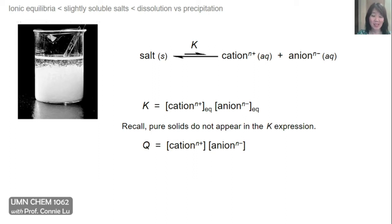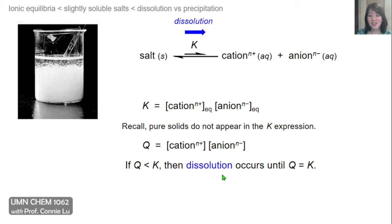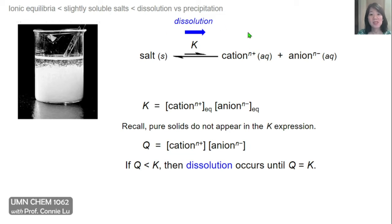We can also write an expression for the reaction quotient, and this would look very similar to K, except that now these concentrations are not at equilibrium. And just like before, if Q is less than K, then we want to reach equilibrium. That means these concentrations are lower than their equilibrium concentration values. So for Q to reach K, this reaction will move to the right toward the dissolved ions, and so dissolution would occur.